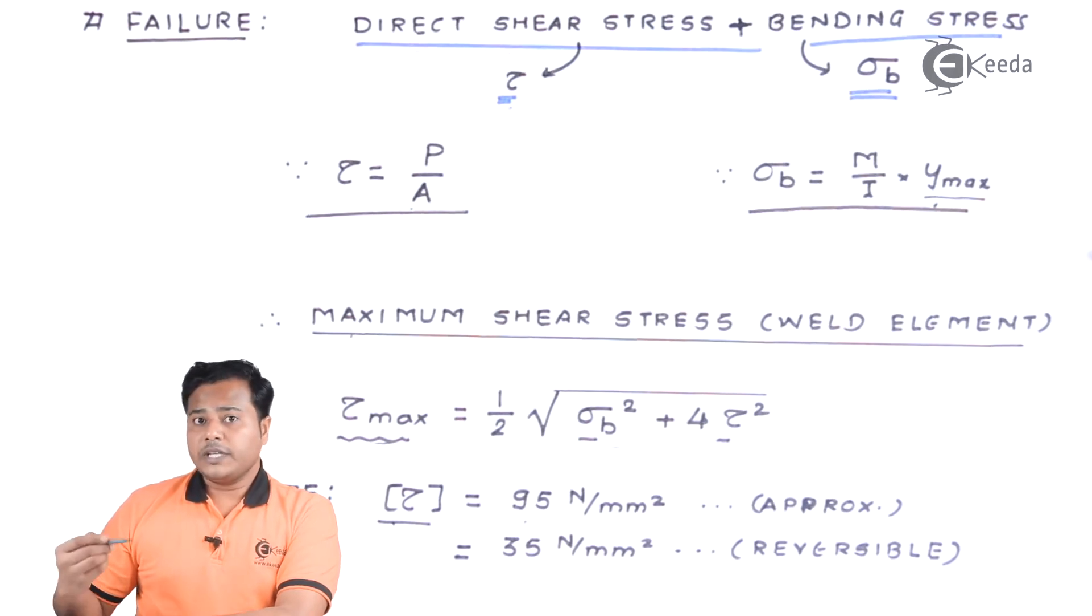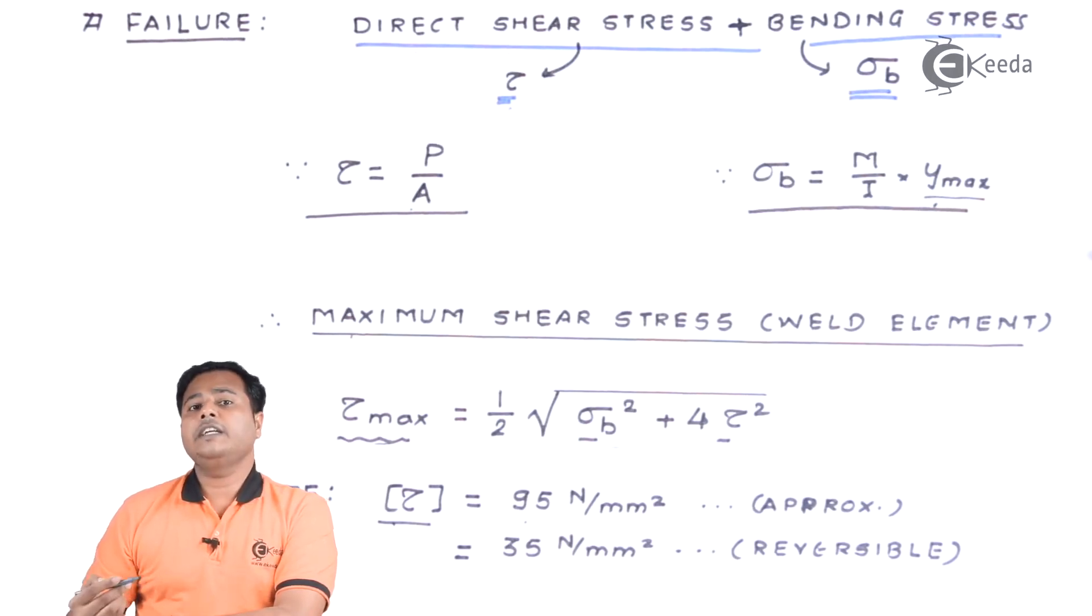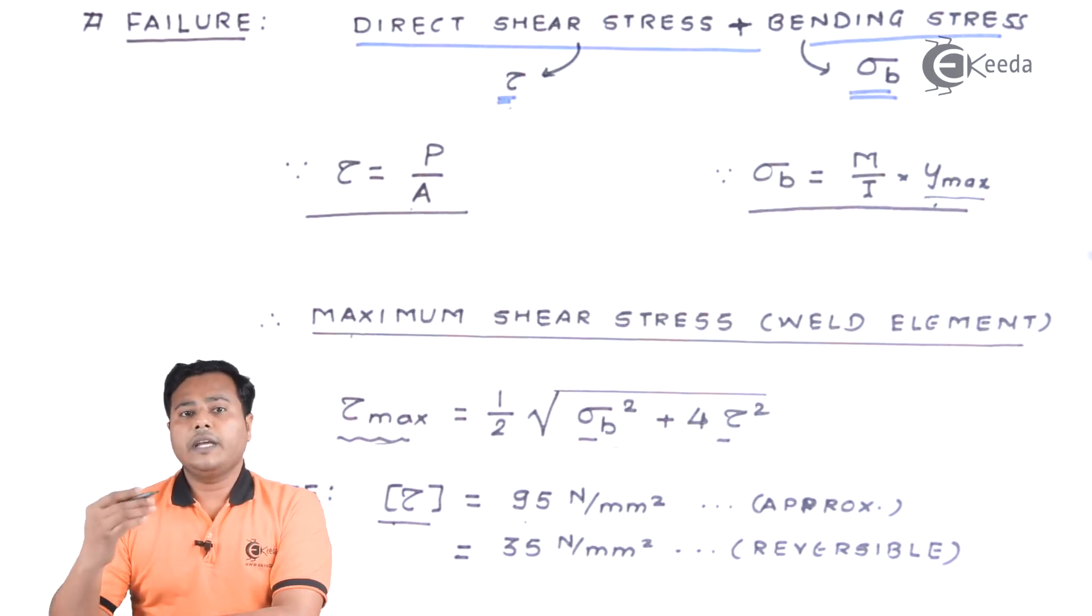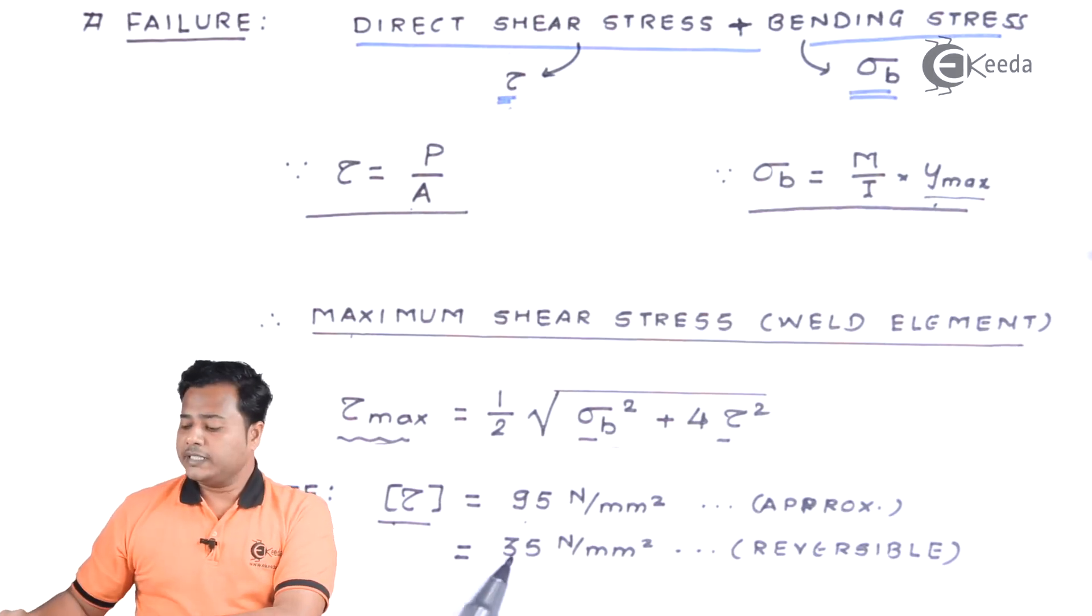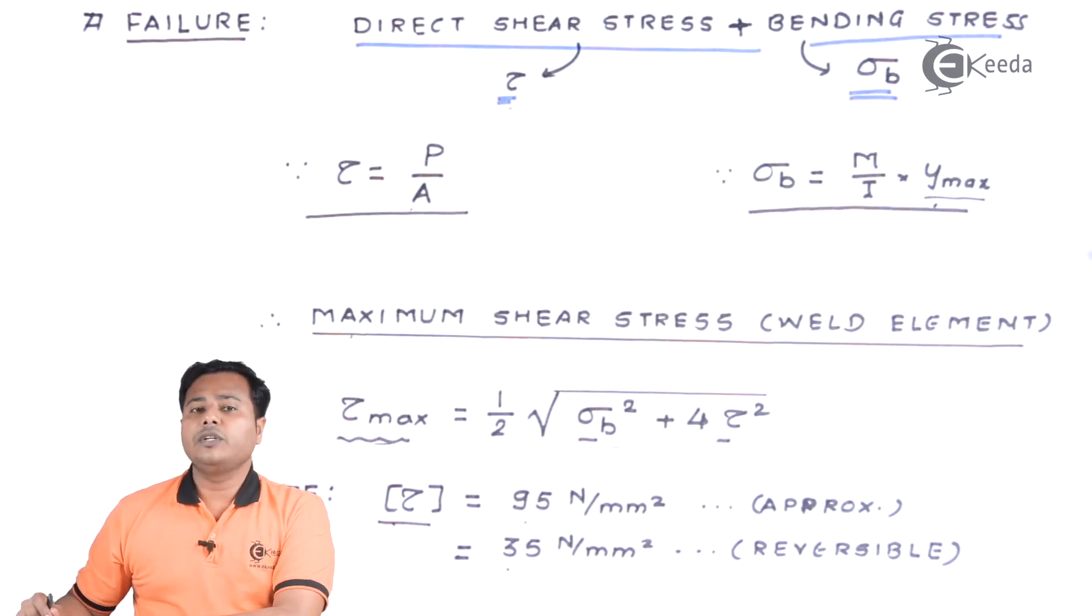But if the load is reversible we know that in some cases load is reversible. In that case the material property should be taken into less consideration. And hence in that case we will consider shear stress which is allowed is 35 Newton per millimeter square. So these two values we need to buy hard properly for this application.